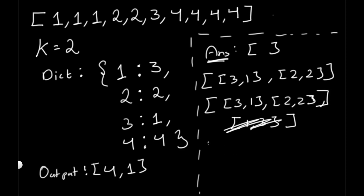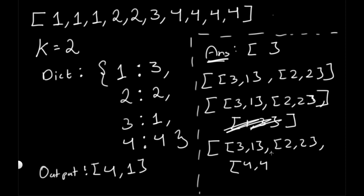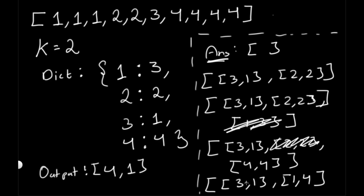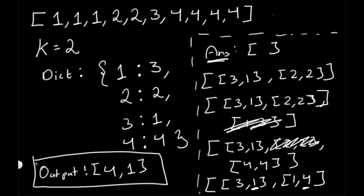We repeat this step for (4, 4). The heap currently has (3, 1) and (2, 2). We push (4, 4) using heappushpop, then compare frequencies 3, 2, and 4. The smallest frequency is 2, so we pop (2, 2) out. The heap now contains (3, 1) and (4, 4). Our final step is to extract just the keys — 1 and 4 — which matches our expected output.